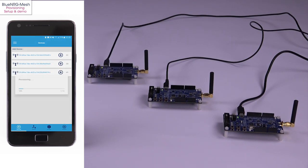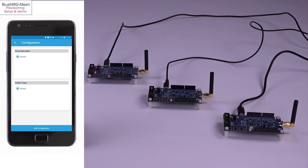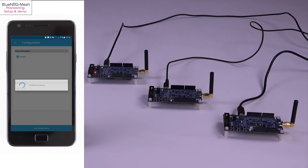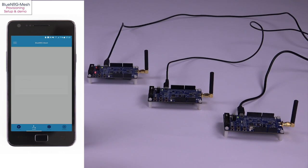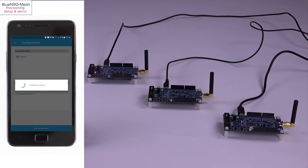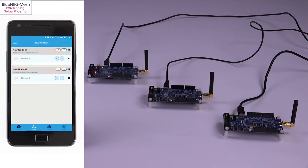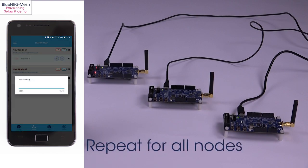Now click on the plus icon to start provisioning for a specific device. A progress bar will display the status during this task. At the end of the provisioning stage, click the Add Configuration button at the bottom of the screen to exit the configuration view, and you will see that a new node will automatically appear. Then click the Devices tab to come back to the list of unprovisioned devices, and repeat this step for all the nodes that you want to add.